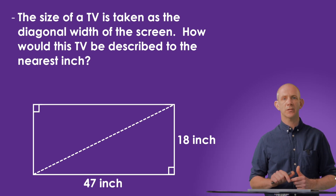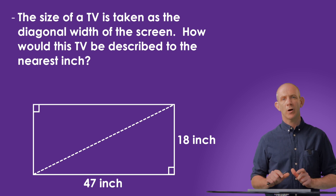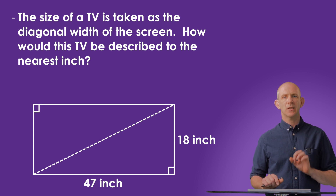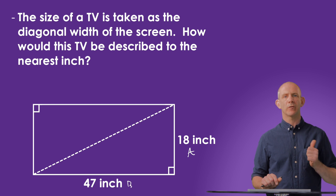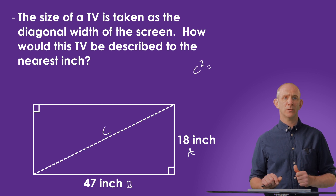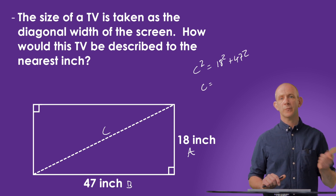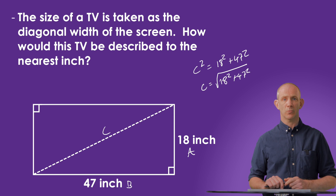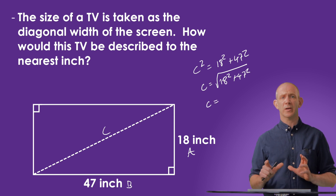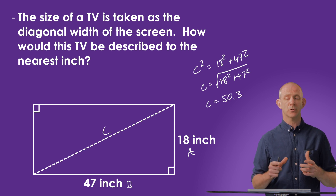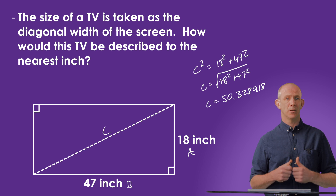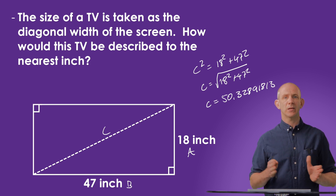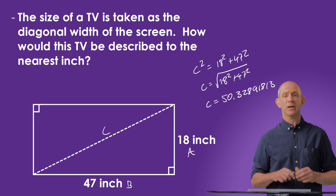Here we're told that the size of a TV is taken as a diagonal measurement of the screen, and we're asked how this TV would be described to the nearest inch. Labelling the triangle and substituting in the values gives C squared equals 18 squared plus 47 squared. Square rooting both sides gives C equals the square root of 18 squared plus 47 squared. Entering this into a calculator gives the hypotenuse as 50.33 inches. Rounding to the nearest whole number, we'd describe this as a 50-inch television.